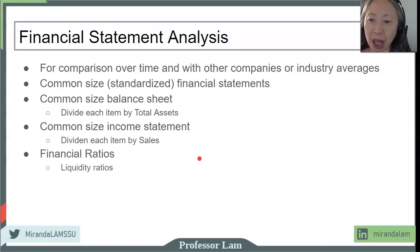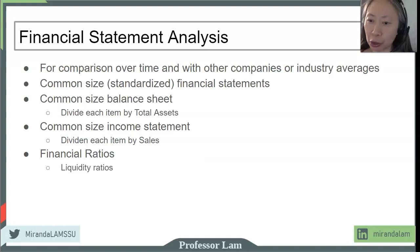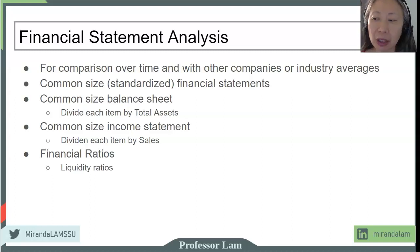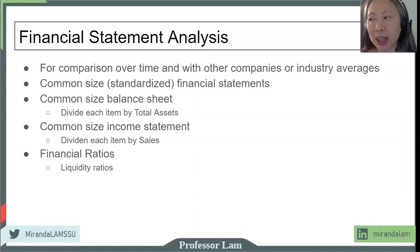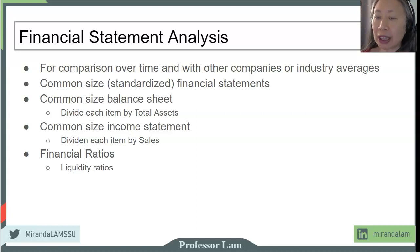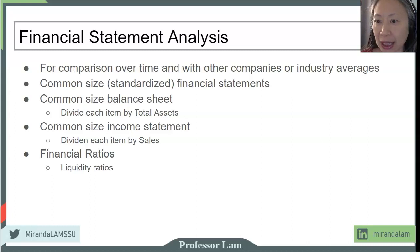The first group is liquidity ratios. These are ratios that measure the very short-term financial health of the firm. Liquidity in finance refers to the ability of the company to meet its very short-term obligations. So liquidity ratio means: does the firm have enough cash on hand or enough assets that it can quickly convert into cash so that it can pay its bills?